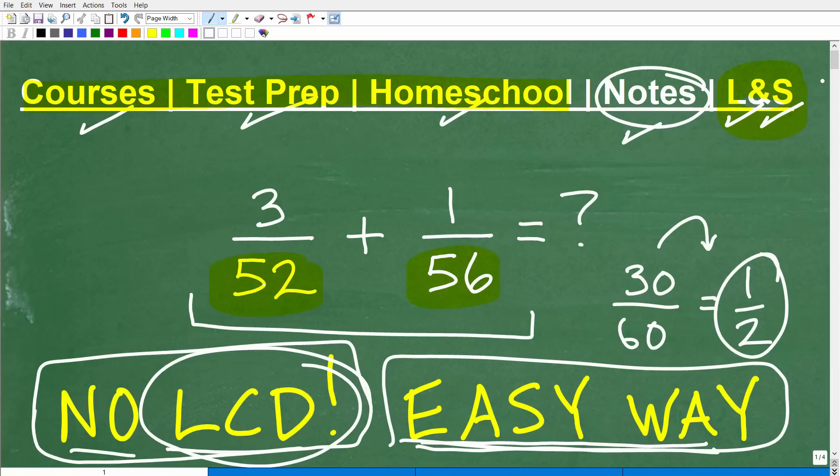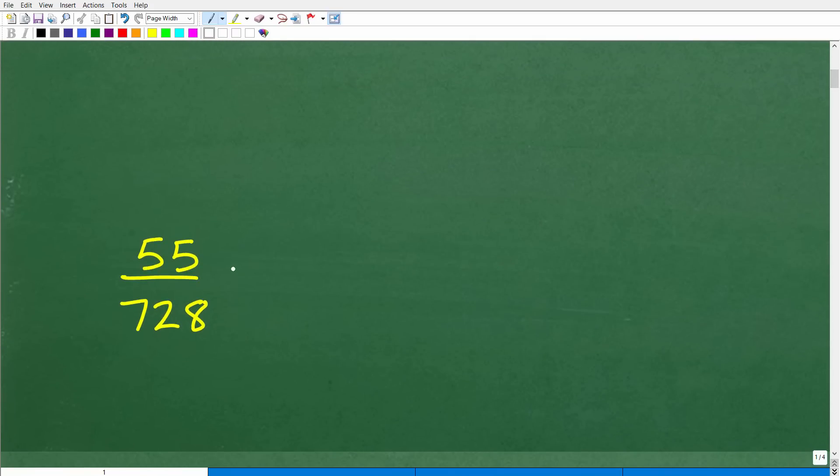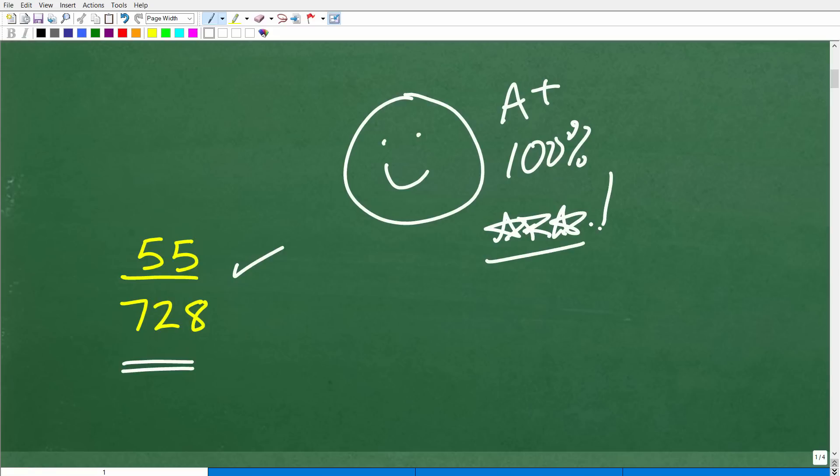And if this video helps you out, don't forget to like and subscribe as that definitely helps me out. So here we got 3 over 52 plus 1 over 56. What is the answer? Well, let's go ahead and take a look at the answer right now. There you go. So, 55 over 728, that is the answer hopefully you got. Now, if you said it's easier just to find the LCD, that's perfectly okay. Great job. If you like working with the lowest common denominator and you know how to find it very quickly and you're accurate, then stick with that particular technique.